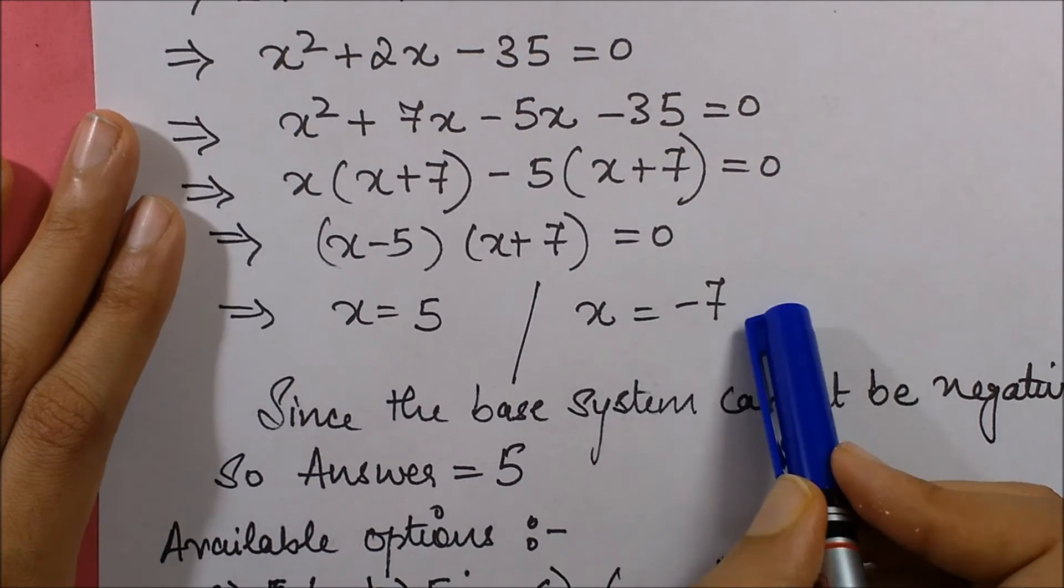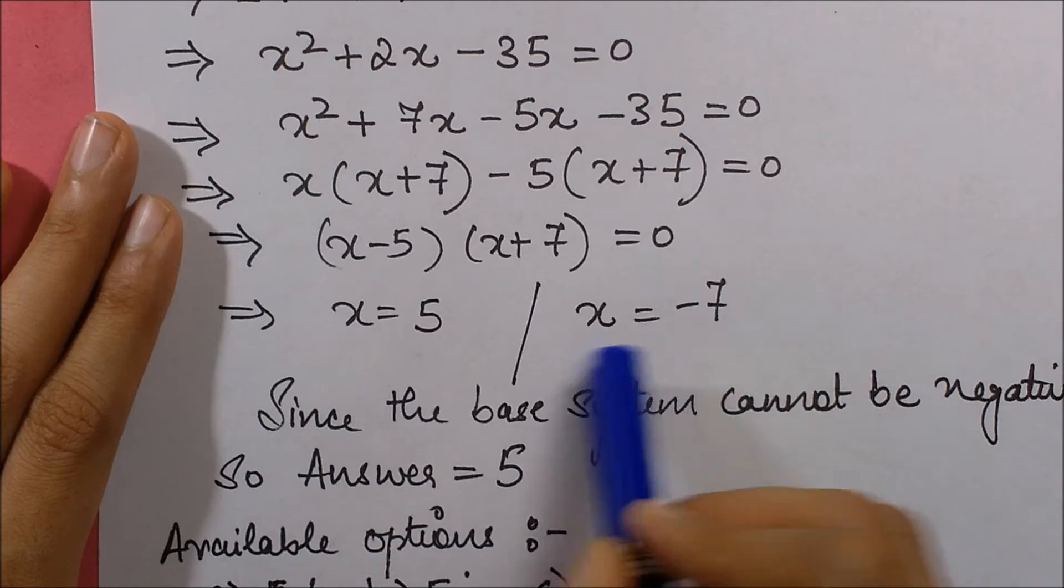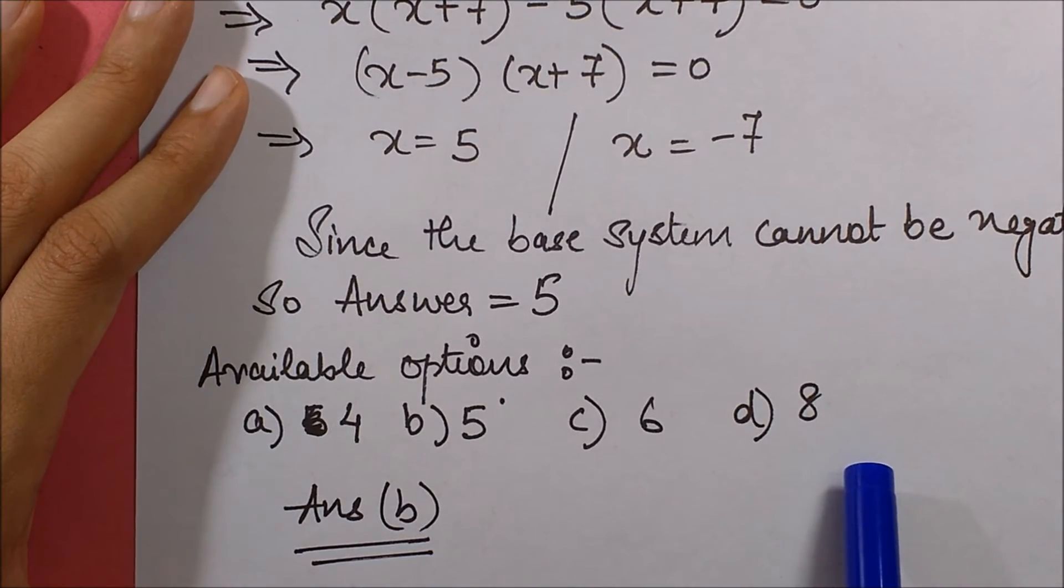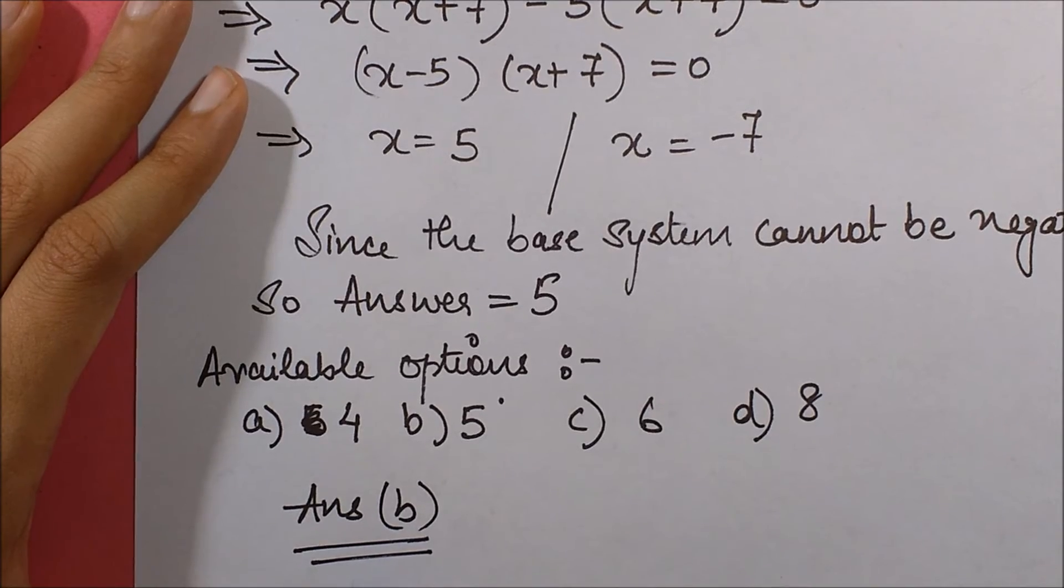Now since the base x cannot be negative, therefore the only answer is 5. You had the options as these. So the answer is b part.